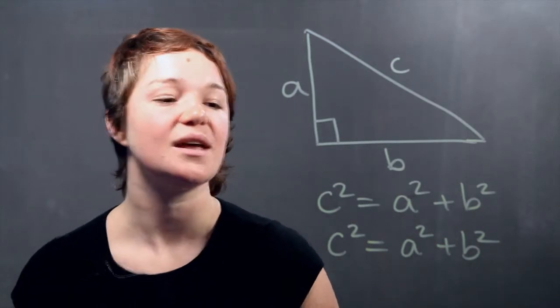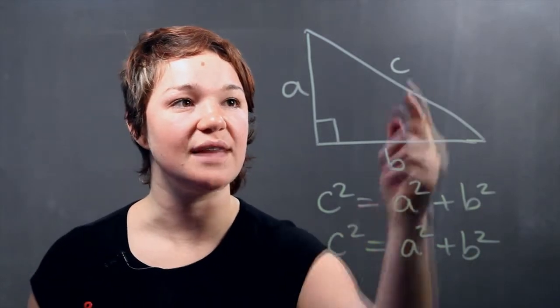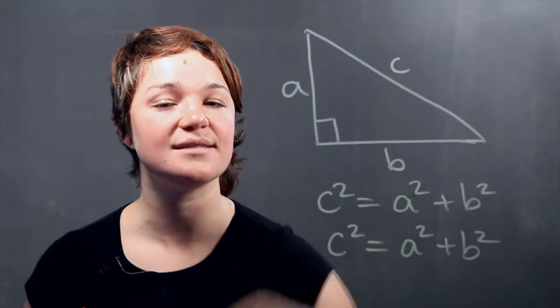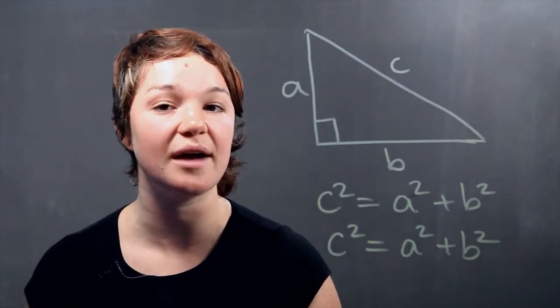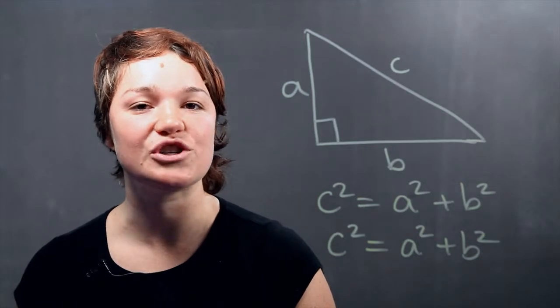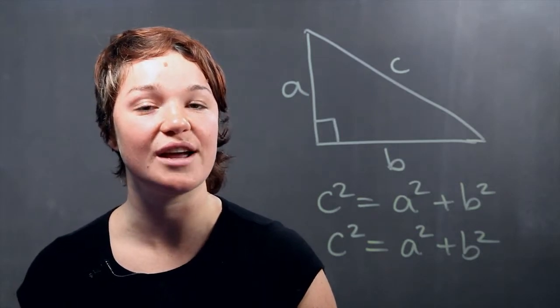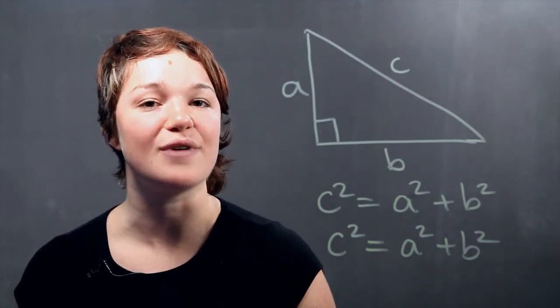Pretty simple, huh? So if you know that the longest side here, C the hypotenuse squared, is equal to the other two sides squared and combined, then you're absolutely sure that the triangle that you have is in fact a right triangle.